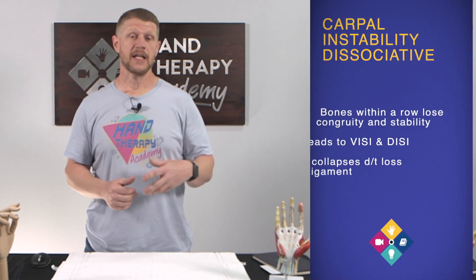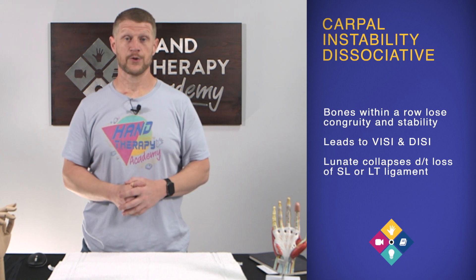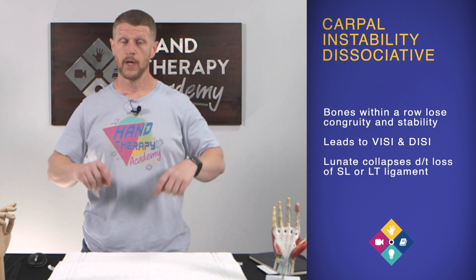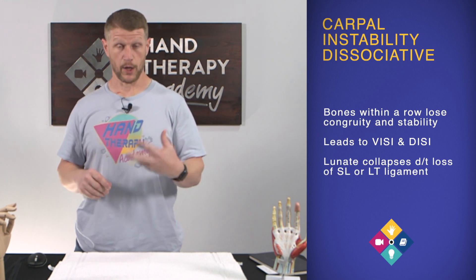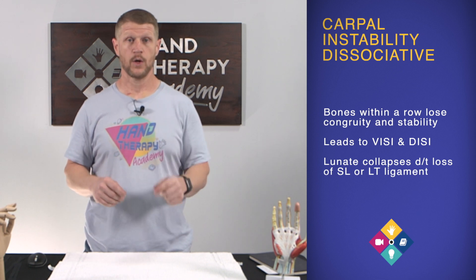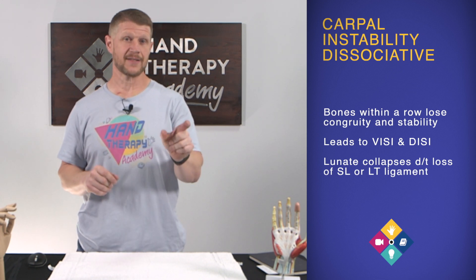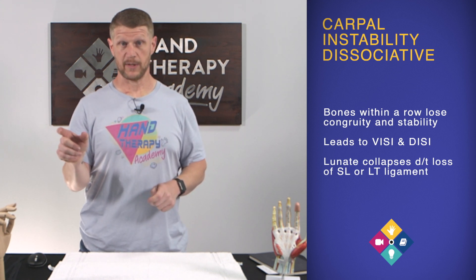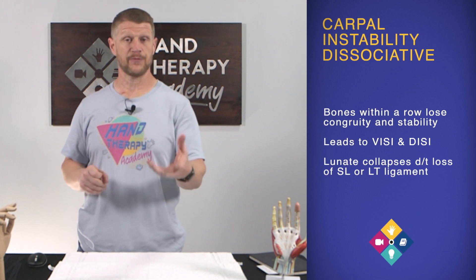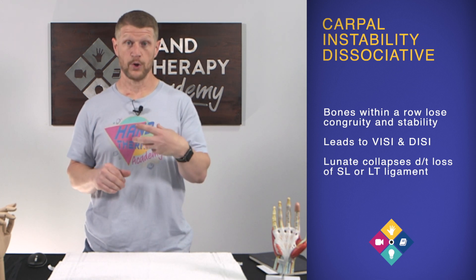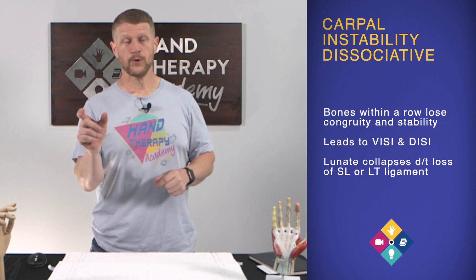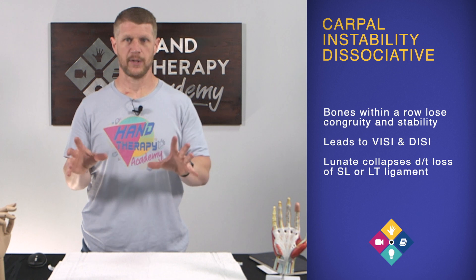CID is carpal instability dissociative. That's when the bones within the row — typically the proximal row — lose congruity and stability. That's when we end up with VISI or DISI: volar intercalated segmental instability or dorsal intercalated segmental instability. That's when we have lunate collapse volarly or dorsally, when we lose lunotriquetral or scapholunate ligament integrity, whether it's an attenuation or a rupture.